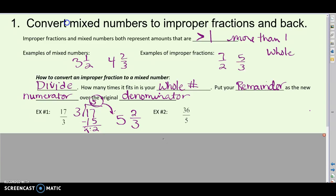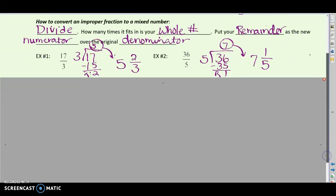How about 36-fifths? Well, 36 divided by 5. 5 goes into 36 seven times. That would be 35 with one left over. So, again, how many times it fits in, that's how many holes I can make. And then my remainder down here, remainder of 1, means I have one-fifth left over. Seven holes and one-fifth.